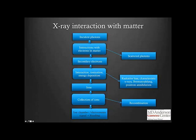There is also some energy loss through characteristic X-rays, Bremsstrahlung, and some positron ionization. Energy deposition happens in the form of ions, and if we place a chamber with an electrometer in there, these ions can be measured. We must remember that not all ions can be captured by the ion chamber — some loss occurs due to recombination. Therefore, we sometimes include a correction factor in our readings to account for this recombination.